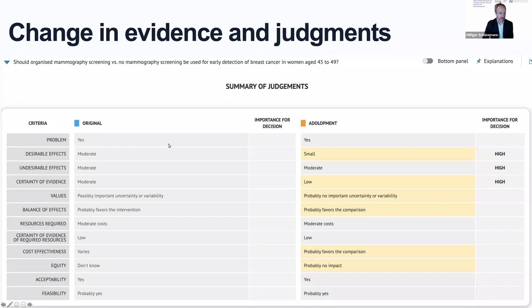A hypothetical result might be that the judgment about desirable effects is changed from moderate to small because of lower breast cancer incidence, which would lead to fewer detected cases while there may be even more false positives. The certainty may be lowered to low because the evidence is considered less direct. The balance of health effects may favor the comparison — not screening — in this particular age group. That would lead to changes in the cost-effectiveness judgment; at the country level, cost-effectiveness often varies, and the hypothetical guideline panel would judge this to probably favor not screening.